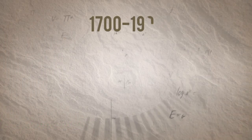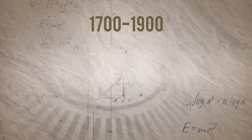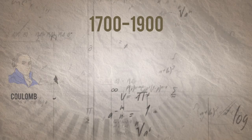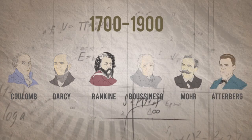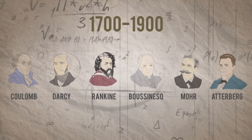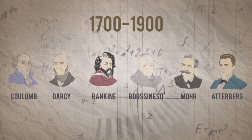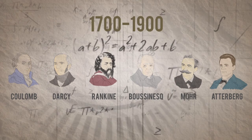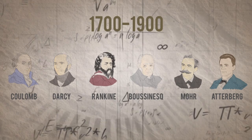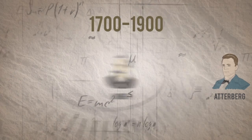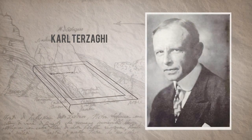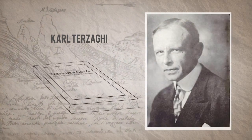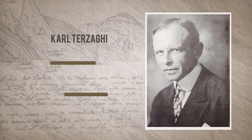From the early 1700s to the early 1900s, scientists such as Coulomb, Darcy, Rankin, Bassinesque, Moore, and Atterberg published fundamental theories on soil mechanics and water flow through soil. Several prominent organizations and societies were formed in the early 1900s to advance this field of civil engineering. Particular recognition is given to Karl Terzaghi, who was considered to be the father of modern geotechnics with his classic book on soil mechanics, published in 1925.